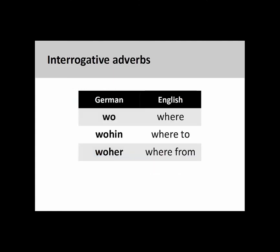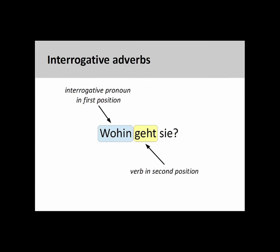Interrogative adverbs also ask questions about the location of an activity and its direction. These interrogative adverbs include 'wo' (where), 'wohin' (where to), and 'woher' (where from). For example, in the sentence 'Wohin geht sie?' (Where is she going to?), the interrogative adverb 'wohin' inquires about the direction of an activity performed by the subject of the sentence.